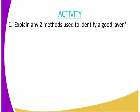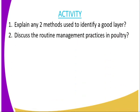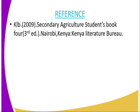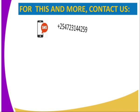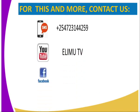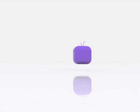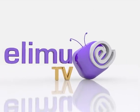We have come to the end of today's lesson. The following questions should be answered: number one, explain any two methods used to identify a good layer; and number two, discuss the routine management practices in poultry. For reference, you can refer to Secondary Agriculture Students Book 4, published by the Kenya Literature Bureau. Thank you for joining me in today's lesson. Until next lesson, bye-bye.